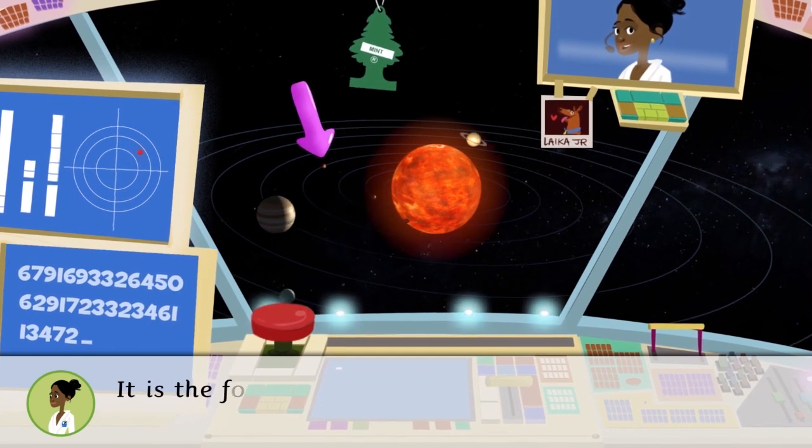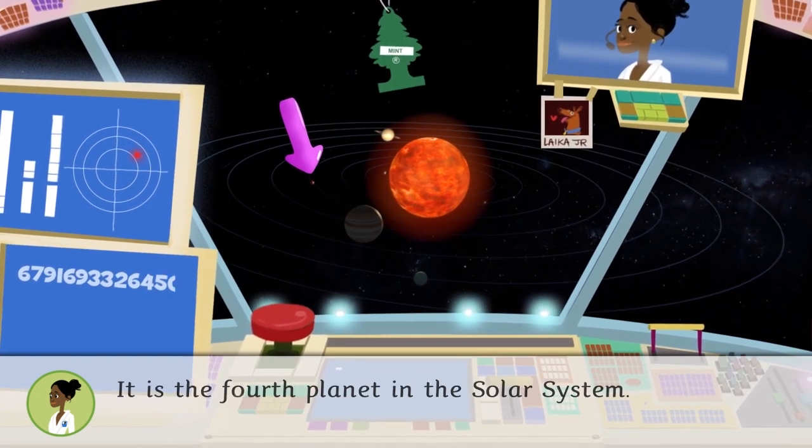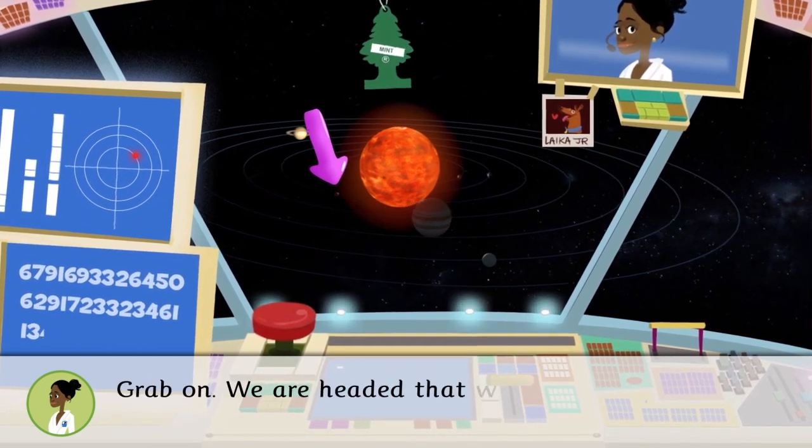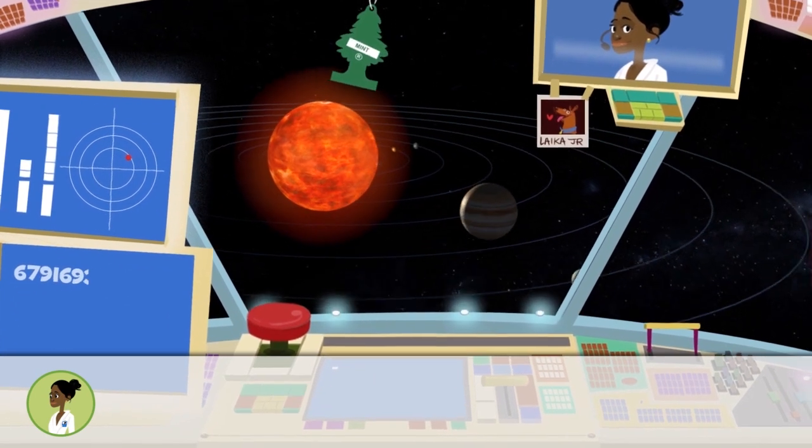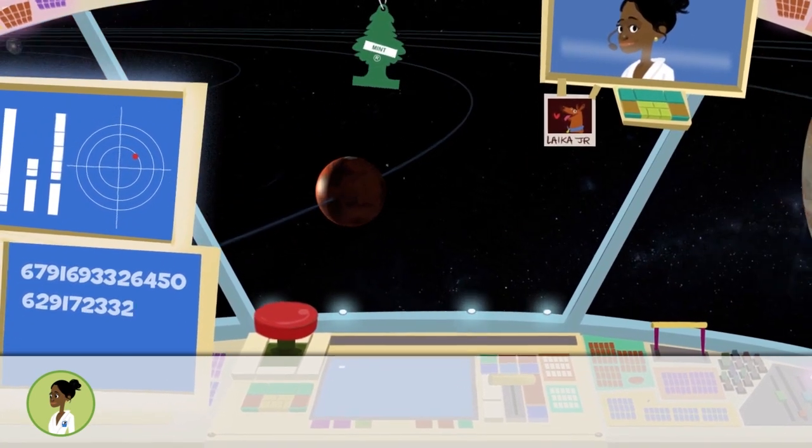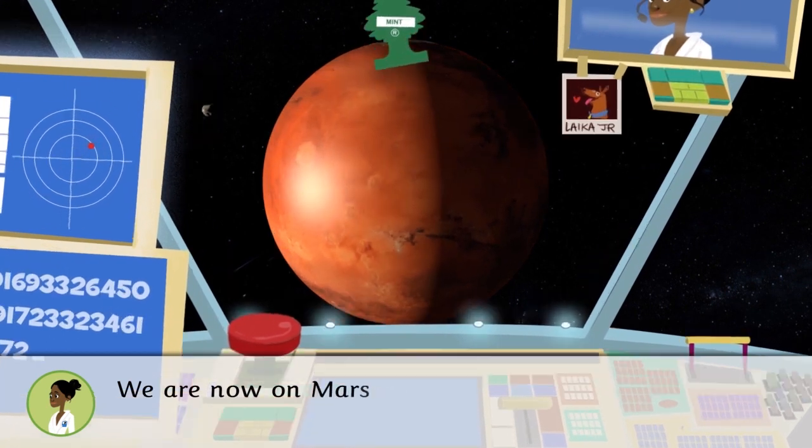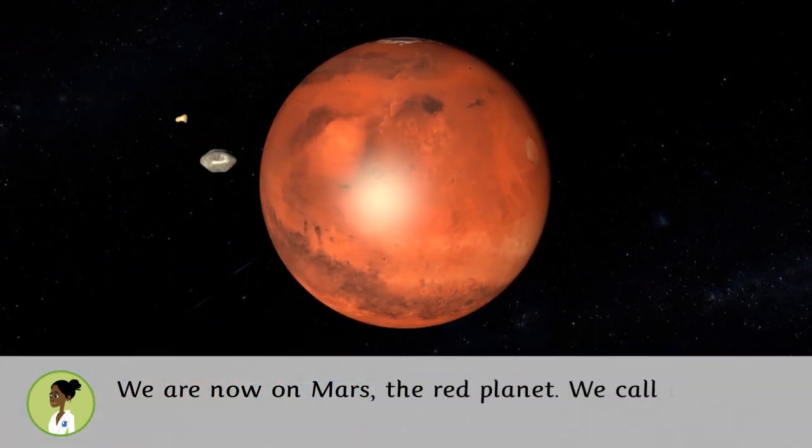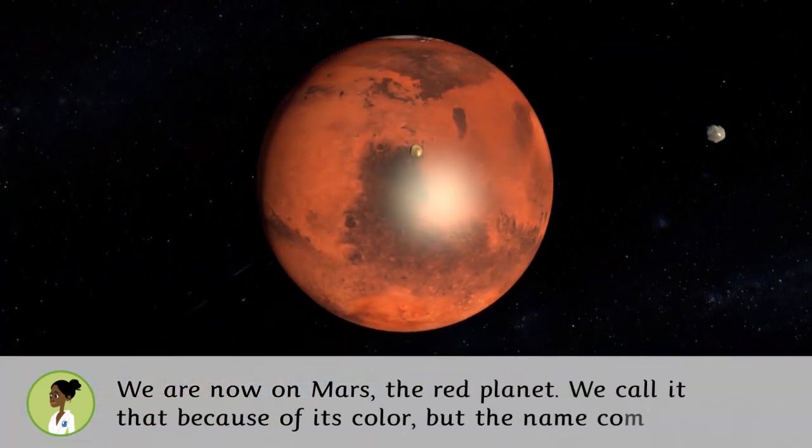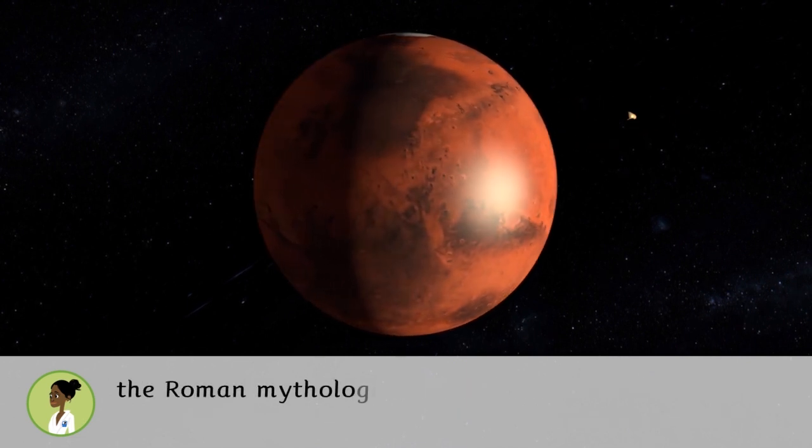It is the fourth planet in the solar system. Grab on, we're headed that way. We are now on Mars, the red planet. We call it that because of its color, but the name comes from the Roman mythological God of war.